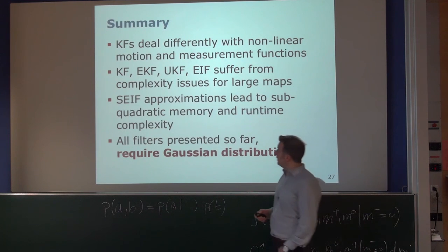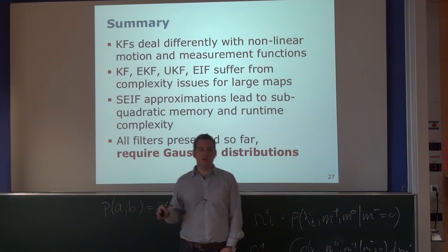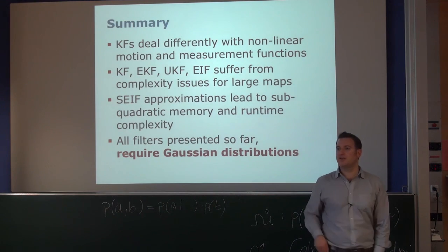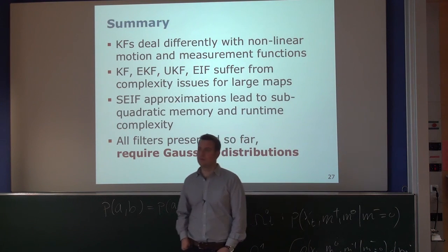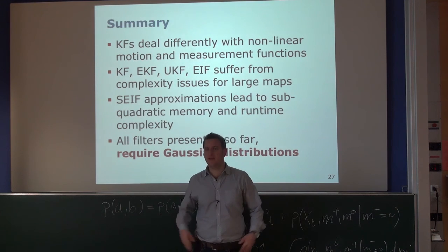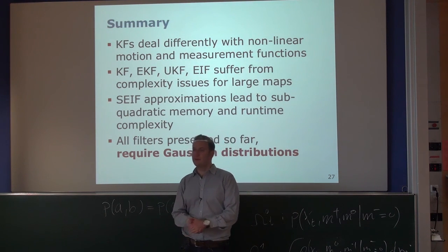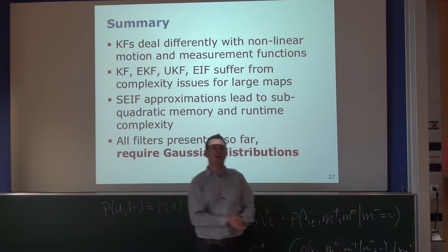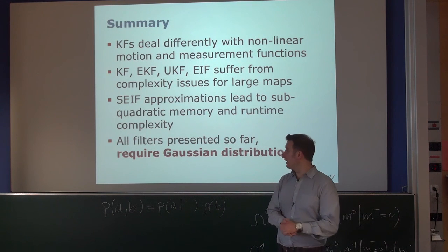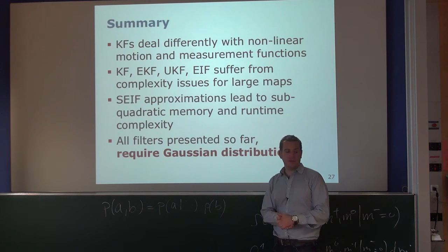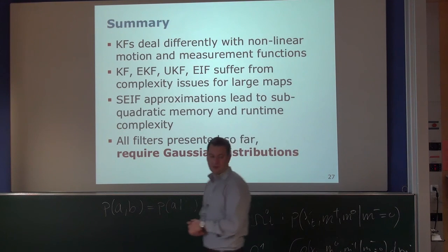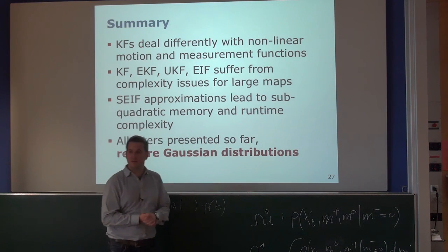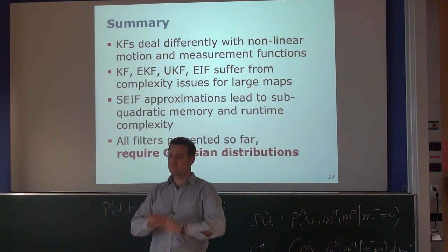The Kalman filter and all its variants are different ways for representing and updating Gaussian distributions based on motion updates and measurements. Depending on whether models are linear or nonlinear, we can choose the appropriate filter for the problem. However, all filters presented so far assume a Gaussian distribution — whatever the true distribution is, it will be represented as a Gaussian.